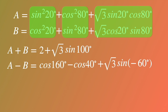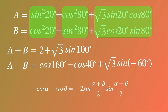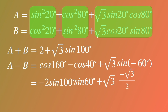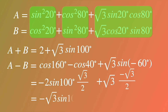Then what's the next step? Recall that cosine of alpha minus cosine of beta equals negative 2 times sine of (alpha plus beta)/2 times sine of (alpha minus beta)/2. Then cosine of 160 degrees minus cosine of 40 degrees equals negative 2 times sine of 100 degrees times sine of 60 degrees. We know sine of negative 60 degrees equals negative square root of 3 over 2, and sine of 60 degrees equals square root of 3 over 2. So A minus B simplifies to negative square root of 3 times sine of 100 degrees minus 3 over 2.